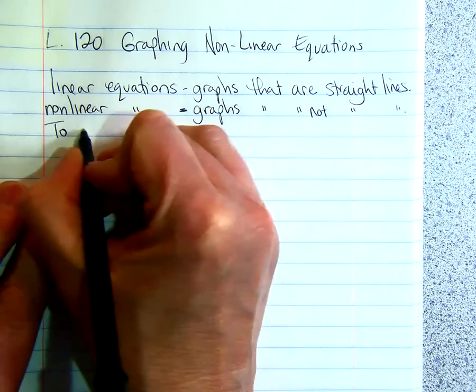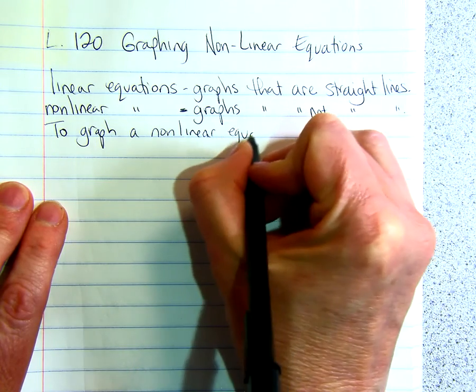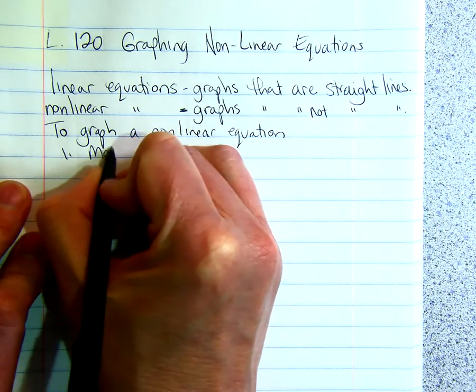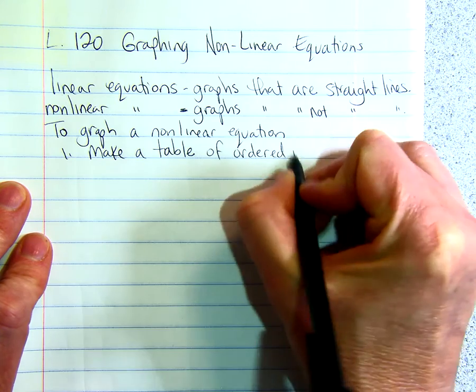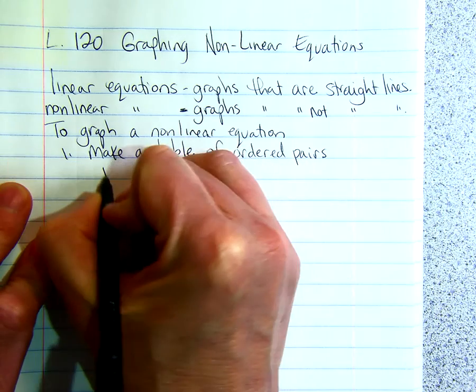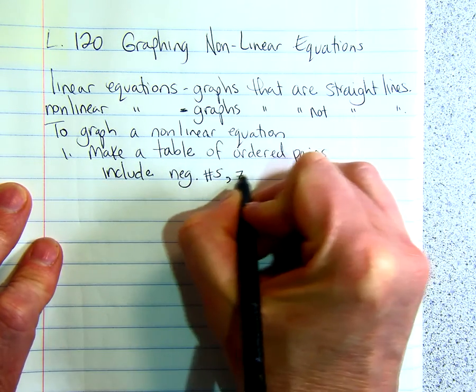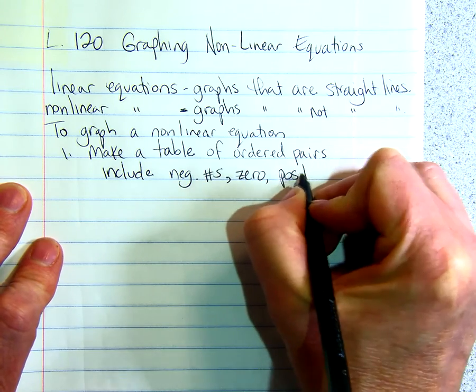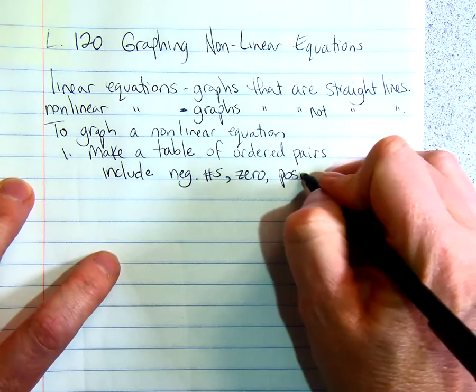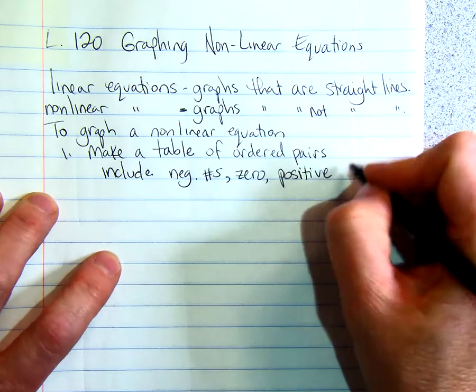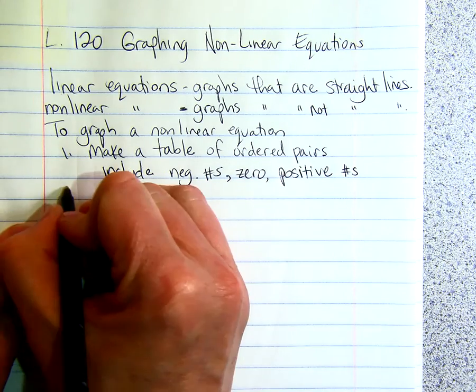To graph a non-linear equation, one, you're going to make a table of ordered pairs. You want to include negative numbers for your x, zero, and positive numbers. When we do linear graphs that are straight lines, you really only need two points. But when we're doing non-linear, you want to have lots of points. So include negatives, zeros, positives.